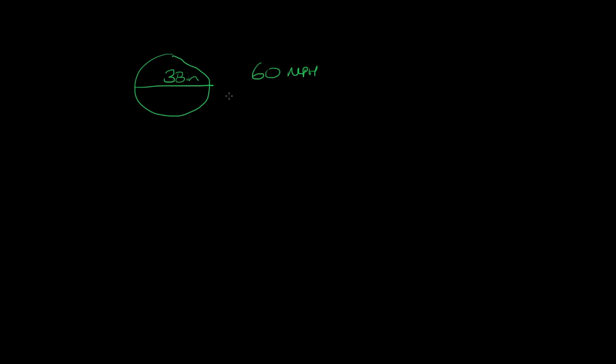Find the angular speed of the wheels in radians per minute. So we want radians per minute. Now notice a couple things. First, this is in terms of miles and this is in terms of inches. This is in terms of hours, this is in terms of minutes. So we want to convert the miles into inches and the hours into minutes.